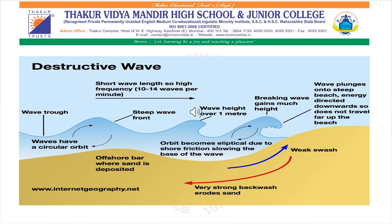Destructive waves have a large wave height and short wavelength. They have tall breakers with a high downward force and a strong backwash. Their frequency is high, with between 13 and 15 waves per minute. The strong downward energy helps erode beach material and cliffs, and the strong backwash results in narrow beach profiles.